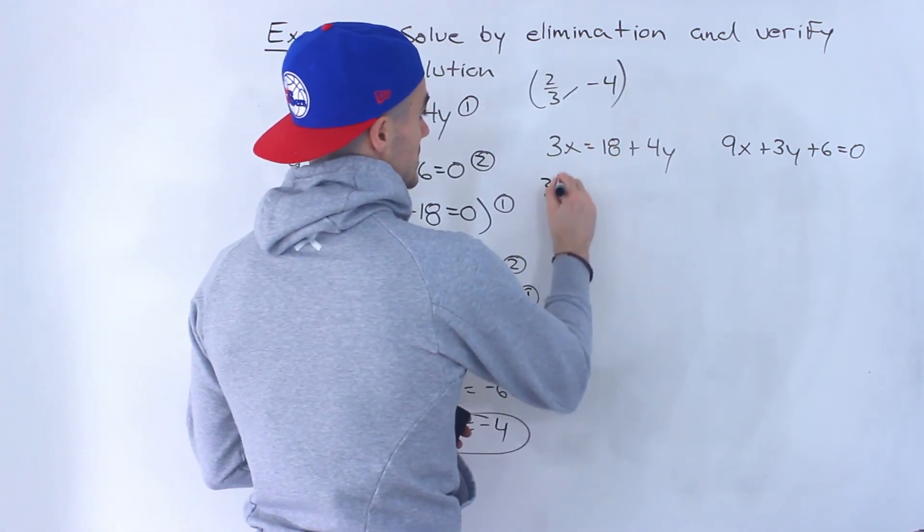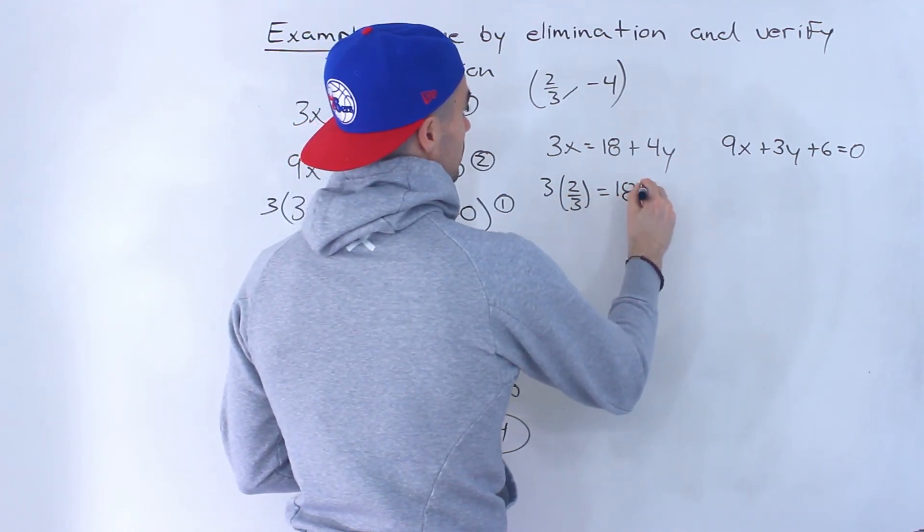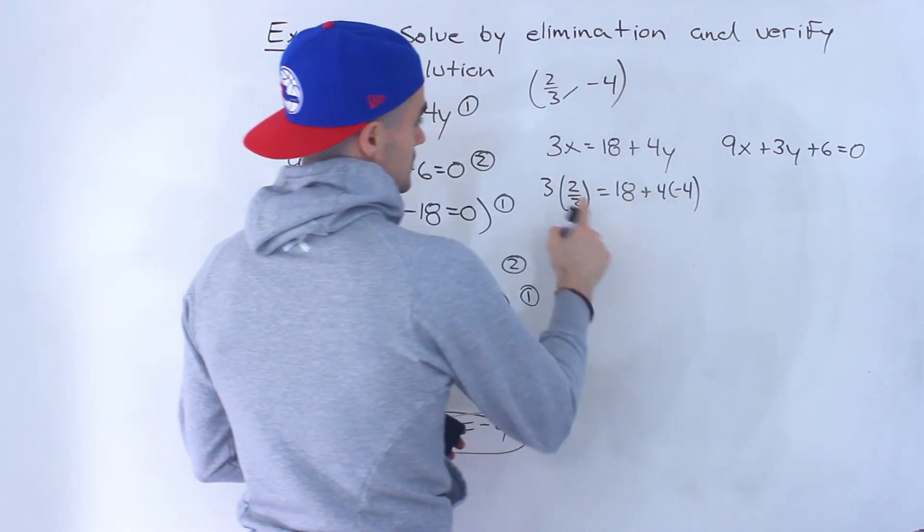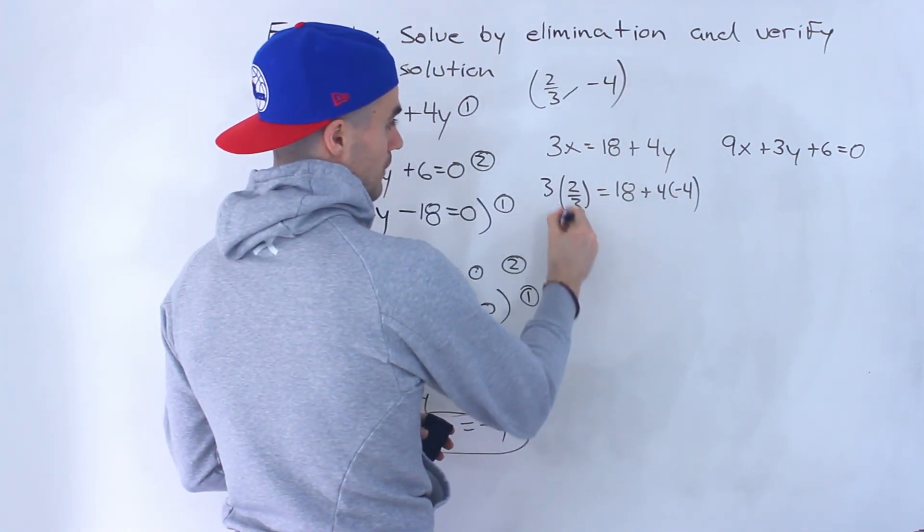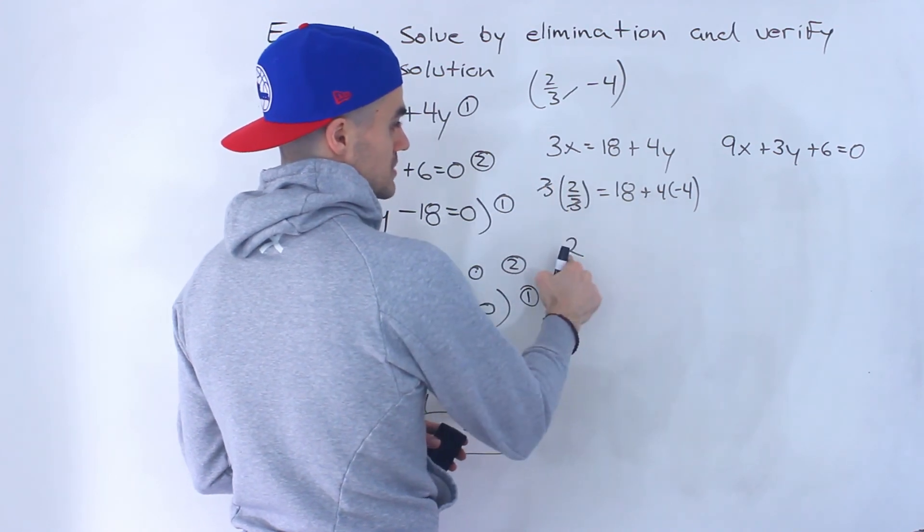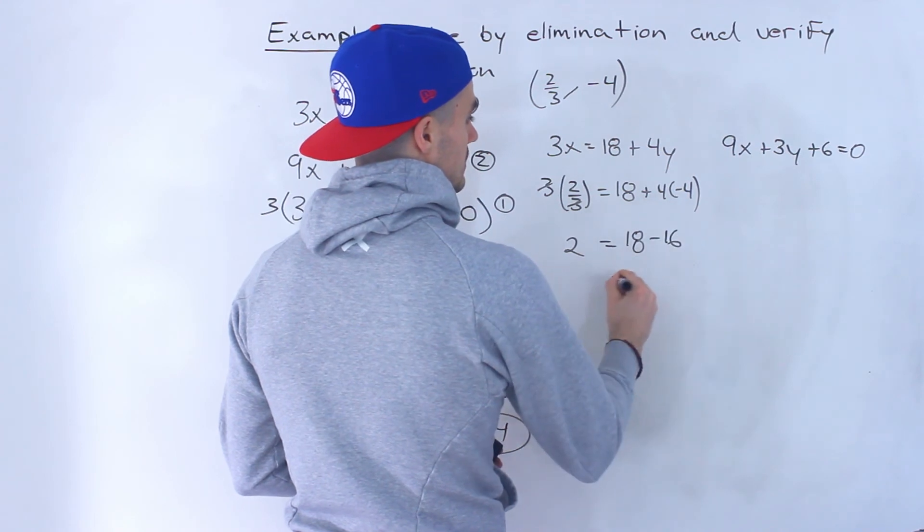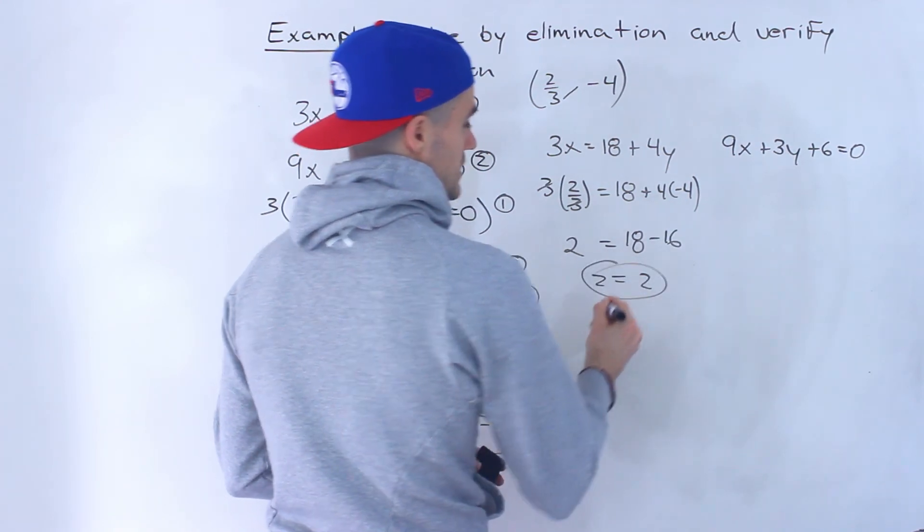We would have 3 times 2 over 3 equals 18 plus 4 times negative 4. So notice 3 times 2 over 3, these 3s cancel out, we're just left with a 2 up top. This would be 18 minus 16, so 2 equals 2. Left side equals right side.